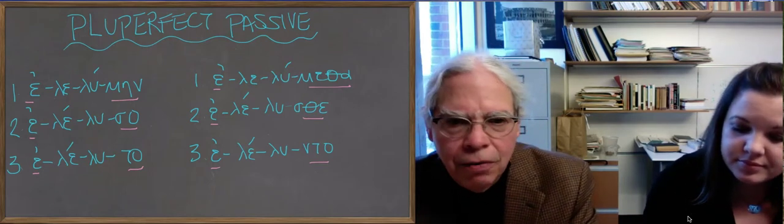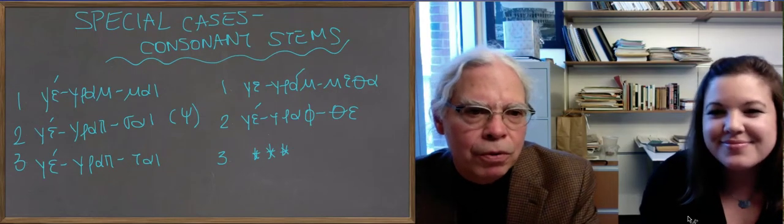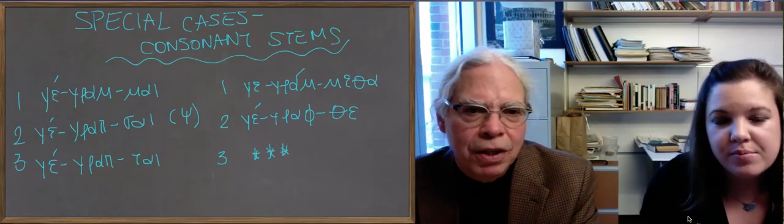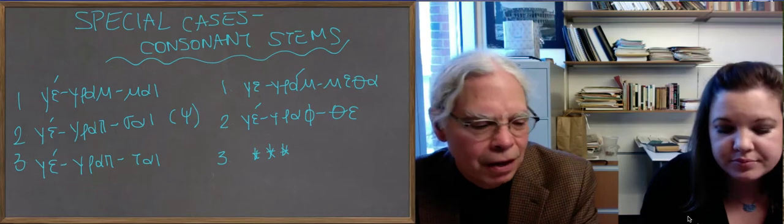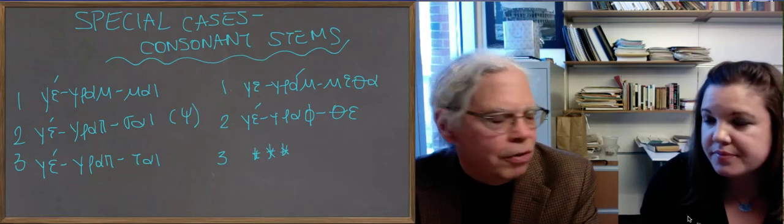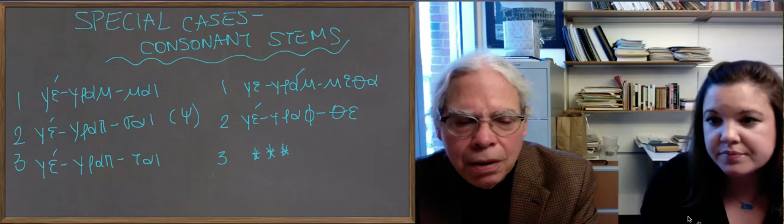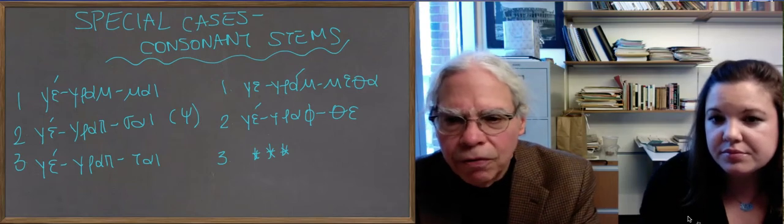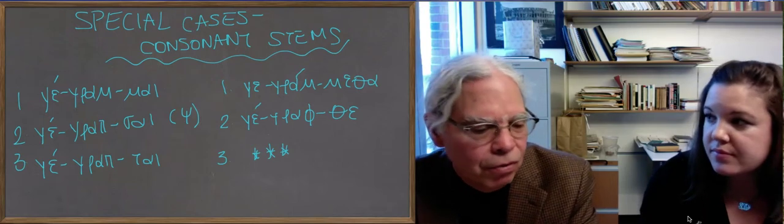And that happens with what we call special cases, consonant stems, but there are a heck of a lot of Greek verbs whose stem ends with a consonant, like pempo ends with a p, grafo ends with a phi, furlato ends with a gamma, and so forth.